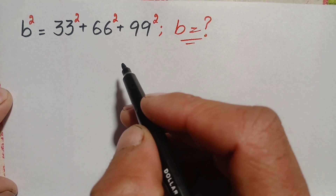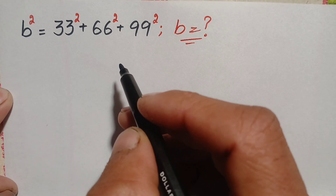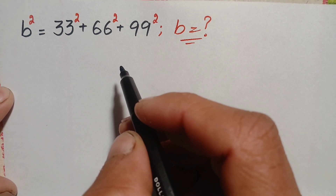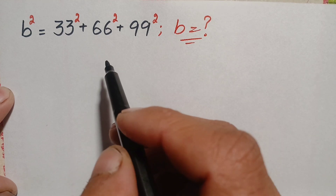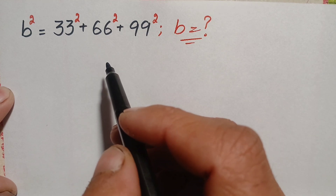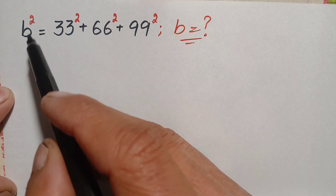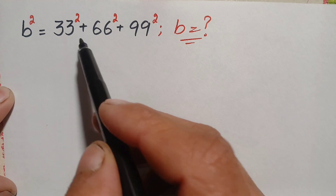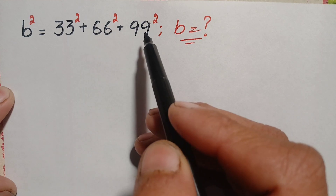Hello everyone, welcome back to Math Explorer. In this video I'm going to solve and find the value of b in this beautiful exponential math problem, which is b² = 33² + 66² + 99².